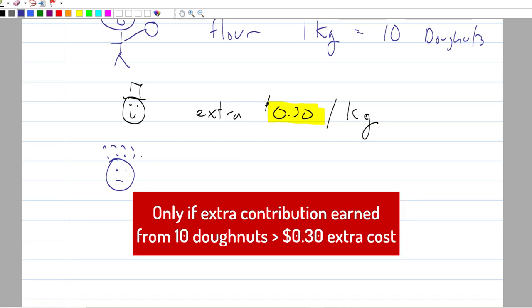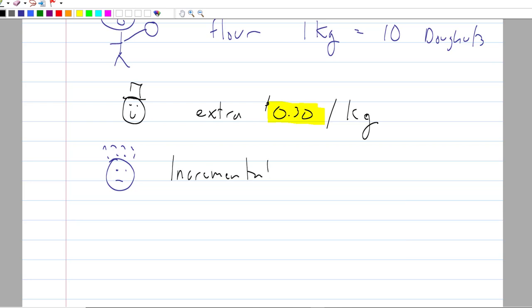I have a burning question. Should I buy more flour at this higher price and make more doughnuts? Here's the answer. Only if the incremental contribution that we earn from selling 10 doughnuts exceeds the additional 30 cents that we had to pay extra to buy that flour.